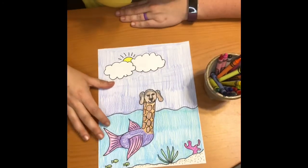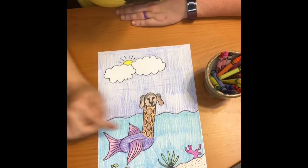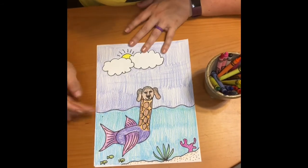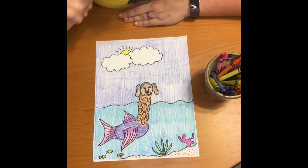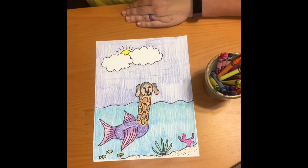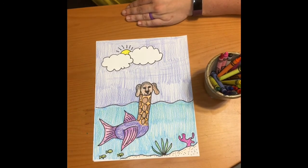So here is my finished mixed-up animal. So I did a dog, a giraffe, and a fish. So I hope you guys take some time to figure out your animals and draw them out and color them.